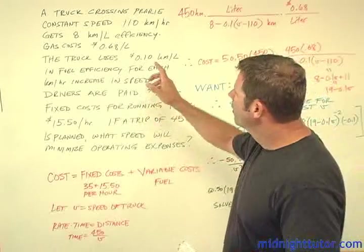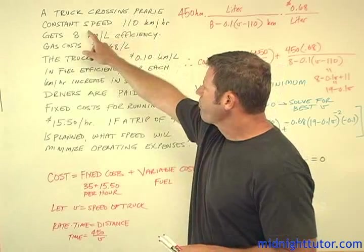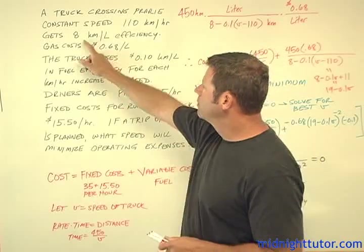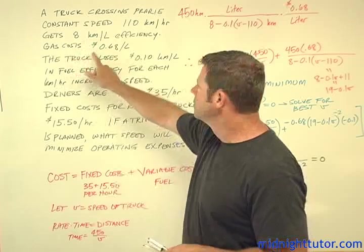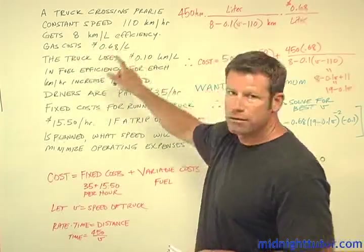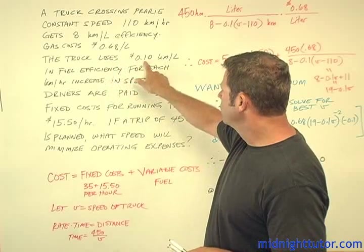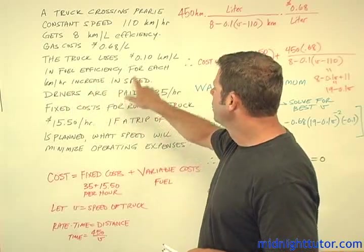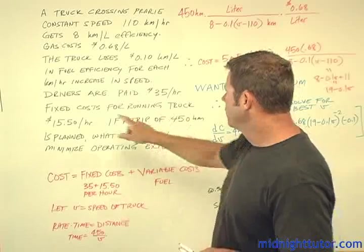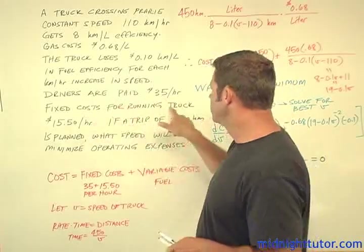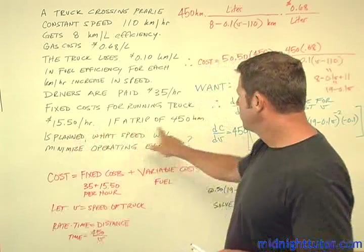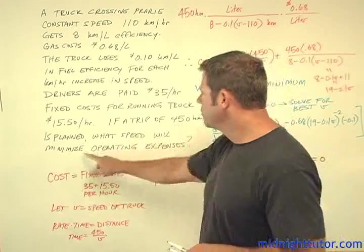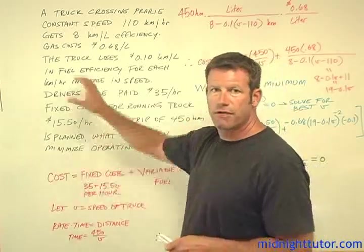Here's the problem statement. We have a truck crossing the prairie at a speed of 110 kilometers per hour. The truck gets 8 kilometers per liter of fuel efficiency, and gas costs 68 cents per liter. The truck loses 0.1 kilometers per liter of efficiency for each kilometer per hour in speed above 110. Drivers are paid $35 per hour, fixed costs for running the truck are $15.50 an hour, and we have a trip of 450 kilometers. What speed will minimize operating expenses?